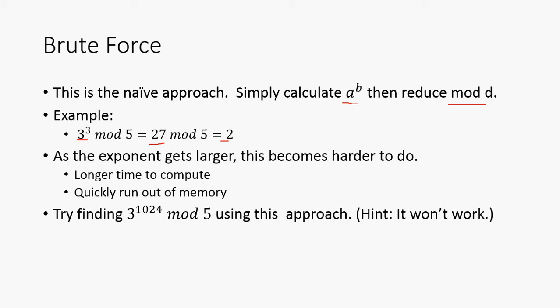But if the exponent gets bigger, it takes longer and you can run out of memory. So 3 to the 1024 mod 5 is going to be huge, right? That's a 489 digit number in decimal, and there are only about 10 to the 80 atoms in the universe, so it's going to be pretty much impossible to calculate that.